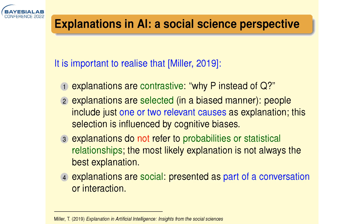Explanations are selected — we usually give only one or two relevant causes instead of all possible arguments to support an explanation. These causes are typically biased as well. Explanations do not refer to probabilities or statistical relationships — that's a tough one when looking at Bayesian networks. And explanations should be social, presented as part of a conversation.